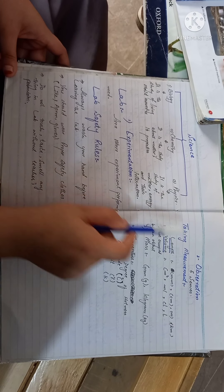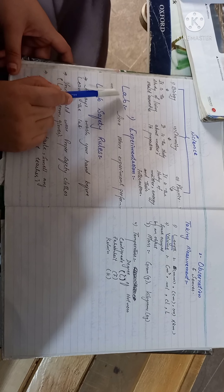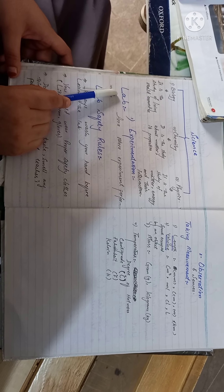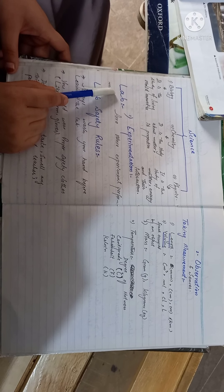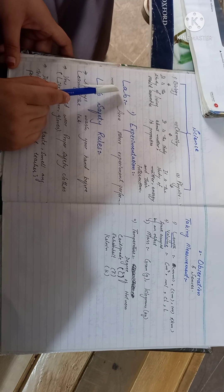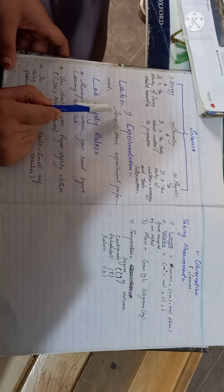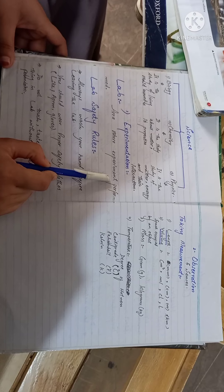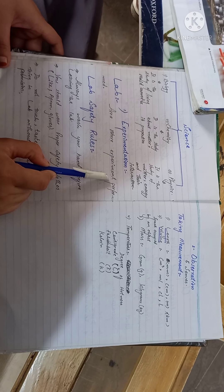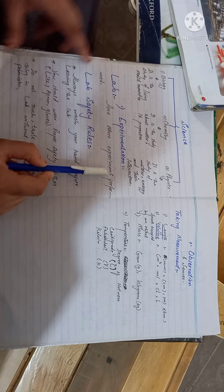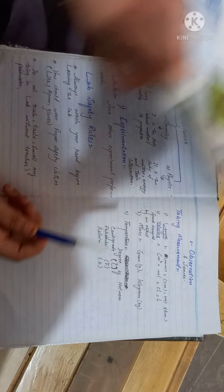Science has two formats. The first is experimentation and the second is observation. Experimentation, where can you perform? In the lab. That is an area where you perform with different chemicals handled. Then it is called laboratory safety rules.